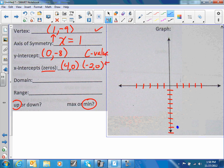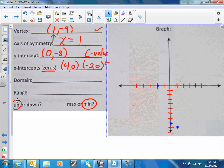My vertex is at (1, -9), which is right here. My y-intercept is at (0, -8). I have an x-intercept at (-2, 0) and at (4, 0).